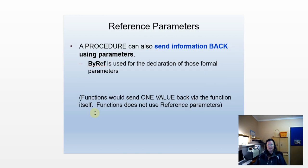Reference parameters: I'm only going to use these with a procedure. Reference parameters allow me to send back information using the parameters. The reserved word ByRef is used. This is a way for the procedure to send back information. Functions will never, under correct circumstances, use reference parameters — they only send back one value via the function itself. Only procedures should use reference parameters to send back two or more values.